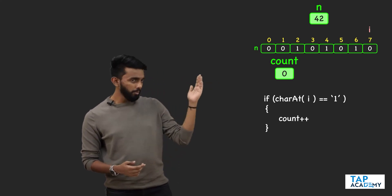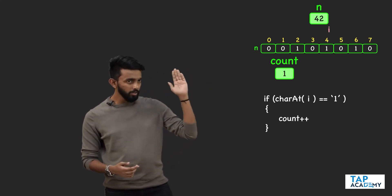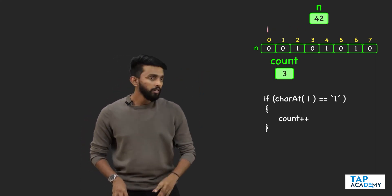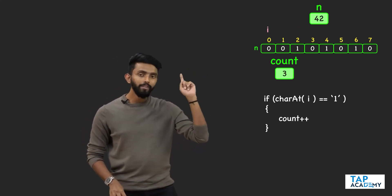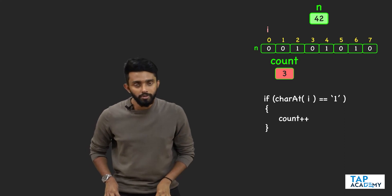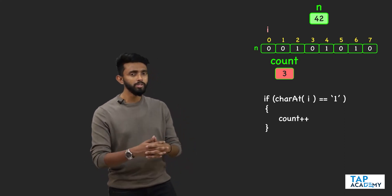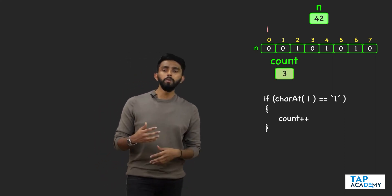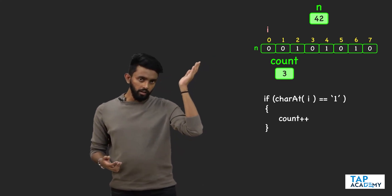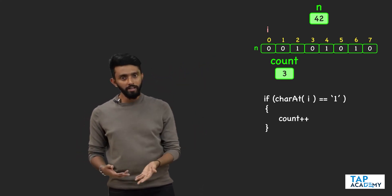Just keep coming backwards until you reach the end of the loop, and the count will reflect the total number of set bits. This is a simple brute force approach. How to convert a given number from decimal to binary, you know there is a function for that.